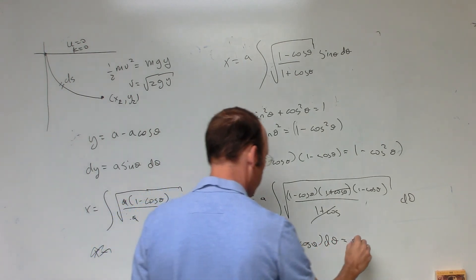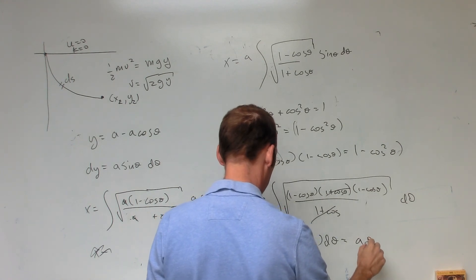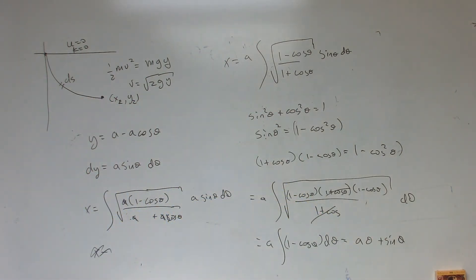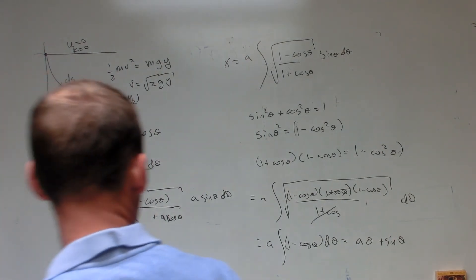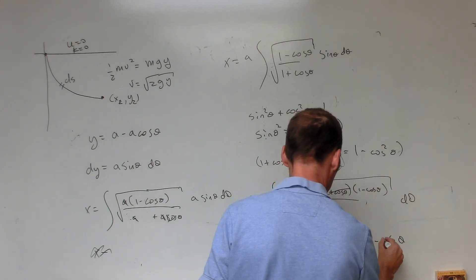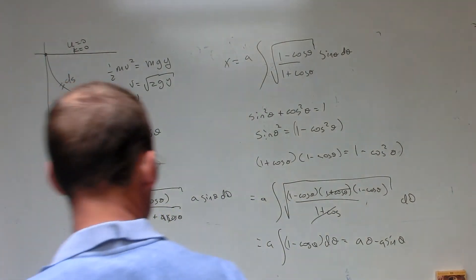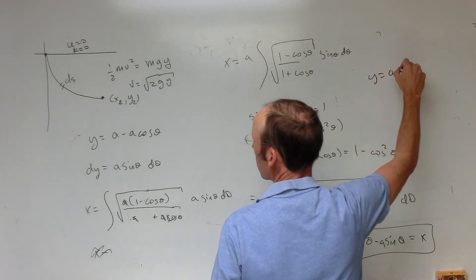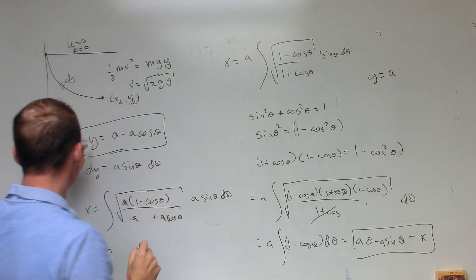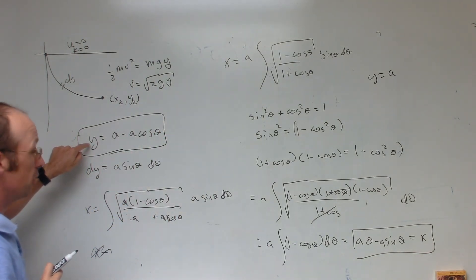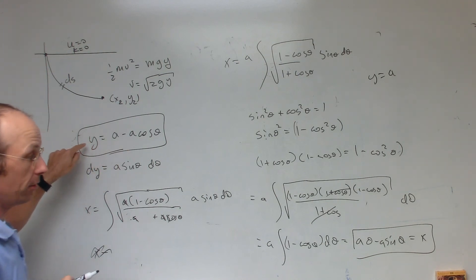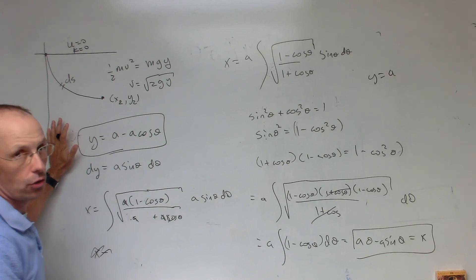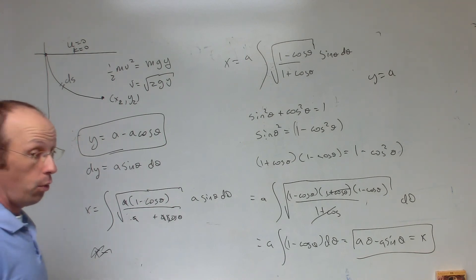Integrating, I get x equals a times (θ − sinθ), plus a constant. And y was defined as a(1 − cosθ). So I have a parametric relationship between x and y: x = a(θ − sinθ) and y = a(1 − cosθ). If I know θ, I can find x and y, and I just let θ vary. This is what we call a cycloid — the path of shortest time under gravity with no friction. I'll show that in a later video, but that's the solution to the Brachistochrone problem.